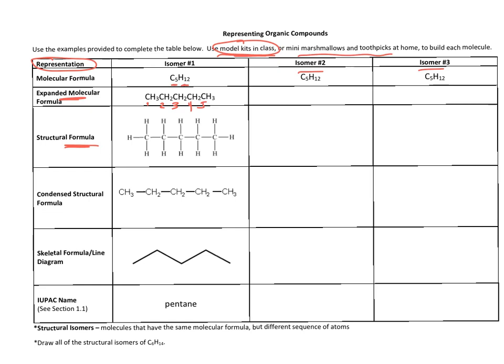So we still have the same five carbons—carbon one, two, three, four, five—and it's following the same sequence that the expanded molecular formula told us. So carbon one is bonded to three H's—one, two, three—and then carbon two is bonded to two H's and so on.